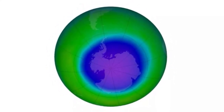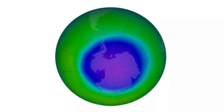Ozone forms in the stratosphere, around 9 to 18 miles — 14.5 to 29 kilometers — above Earth's surface. It forms when UV radiation splits regular oxygen molecules, which are made of two oxygen atoms, O2. The two free-floating oxygen atoms then each bond with an oxygen molecule, forming a molecule made of three oxygen atoms.